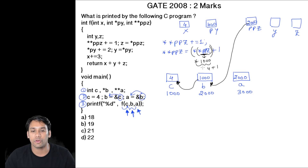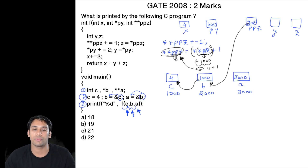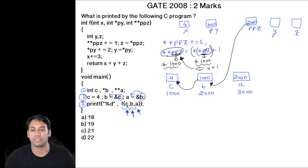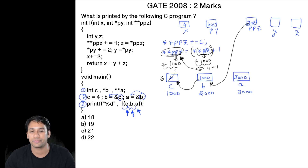This value of 4 + 1 is stored back at the location given by **ppz. From the first star we go to location 2000, which points to location 1000. So in location 1000 we are going to store 5.